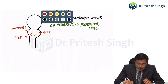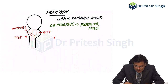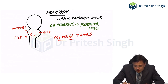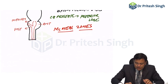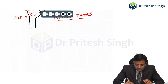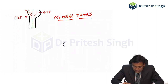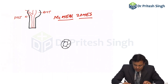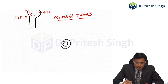Which classification is used nowadays? That is McNeal zones. Nowadays, we are using McNeal zones. What are these McNeal zones in the prostate? This is simple anatomy. Now, can you see — this is the urethra. Around the urethra, there are periurethral muscles.